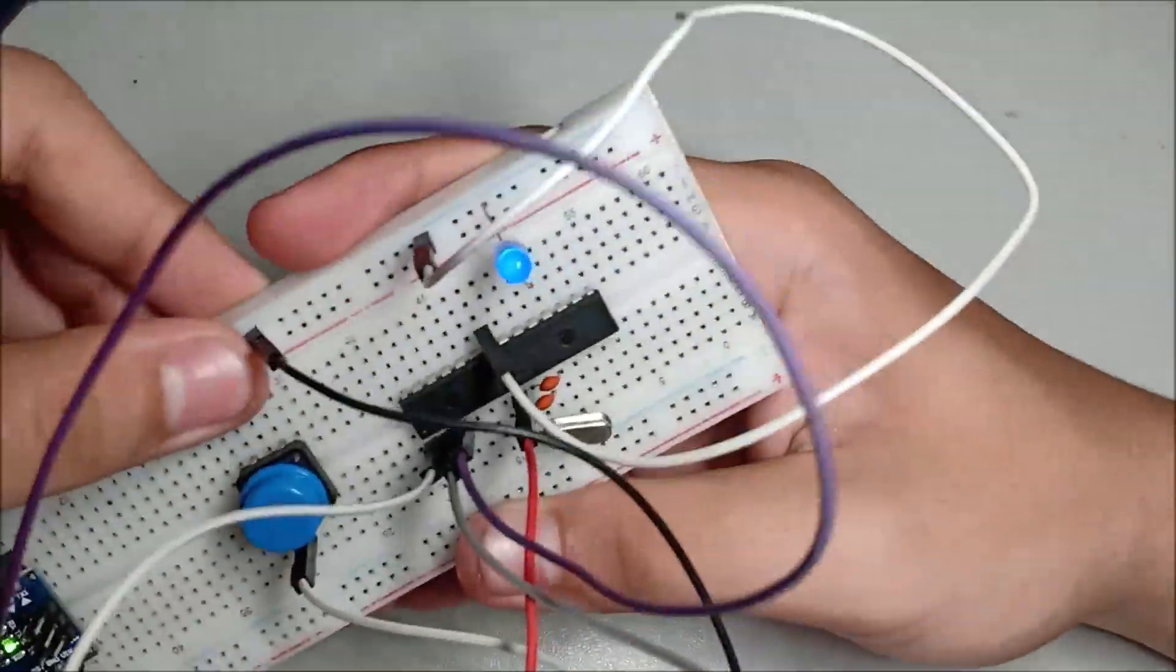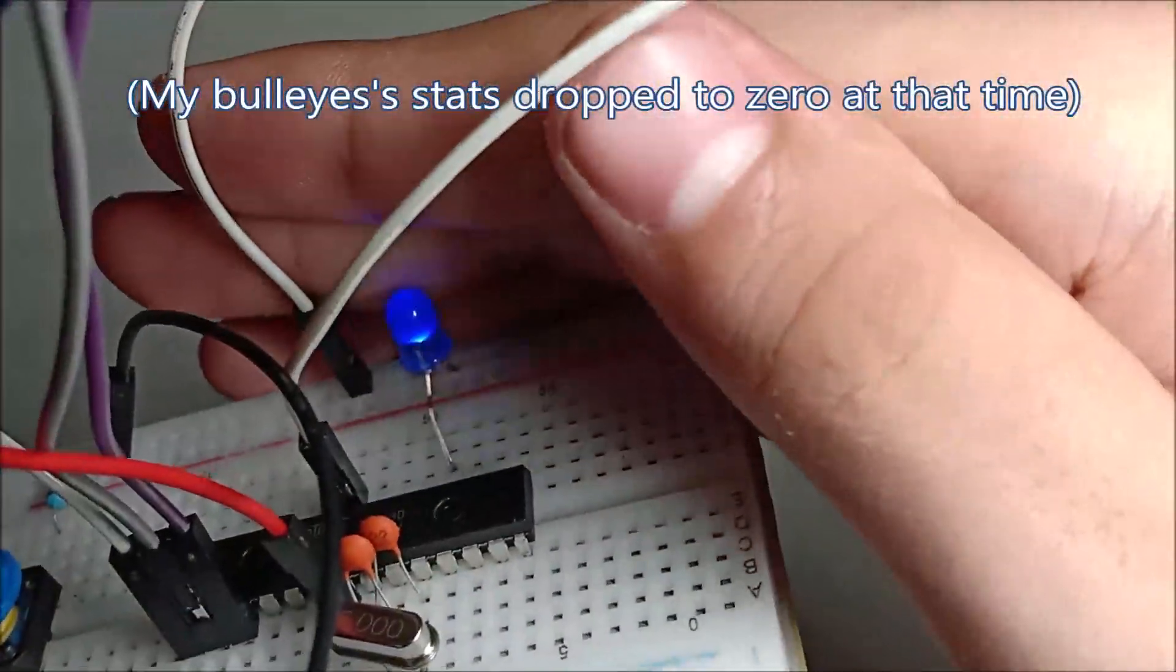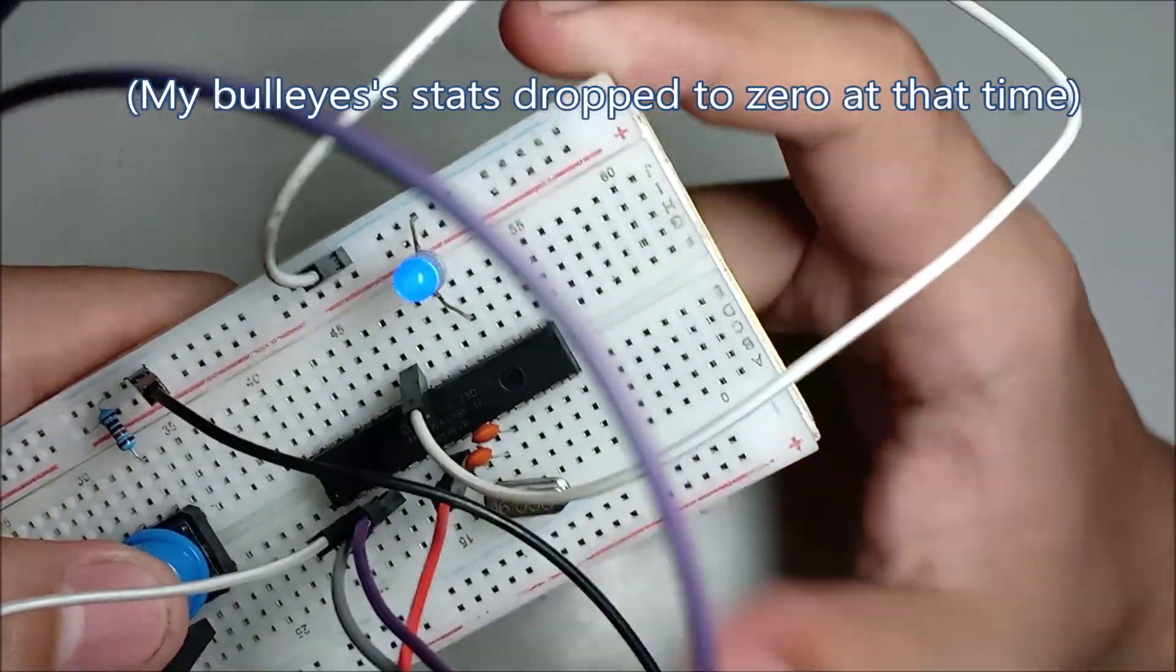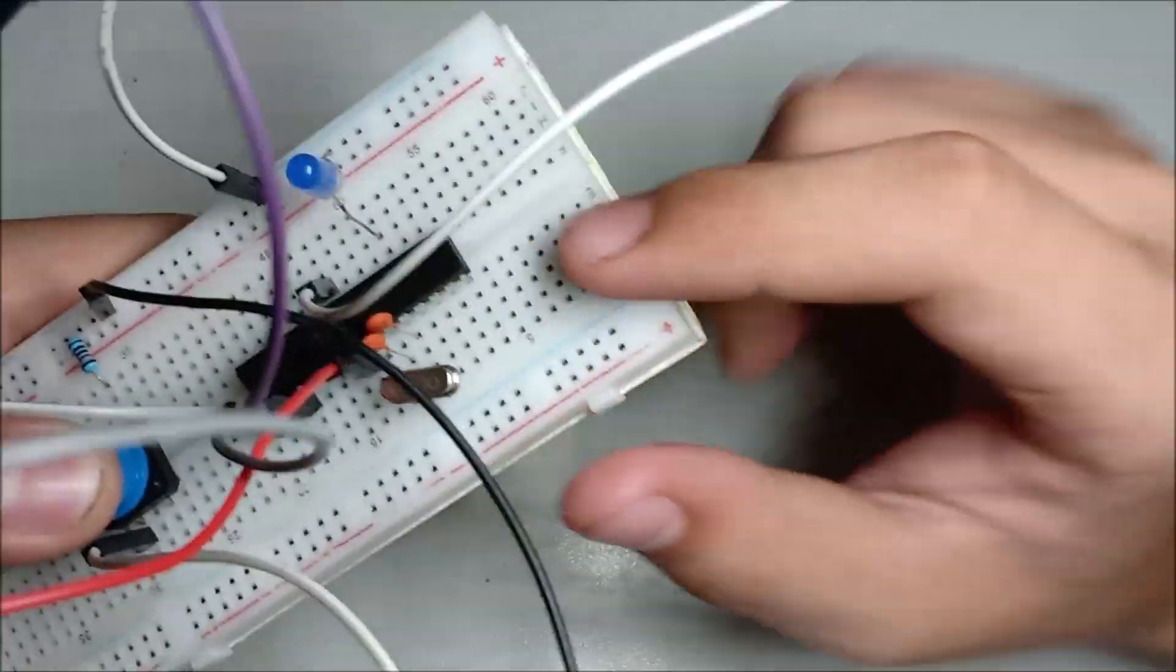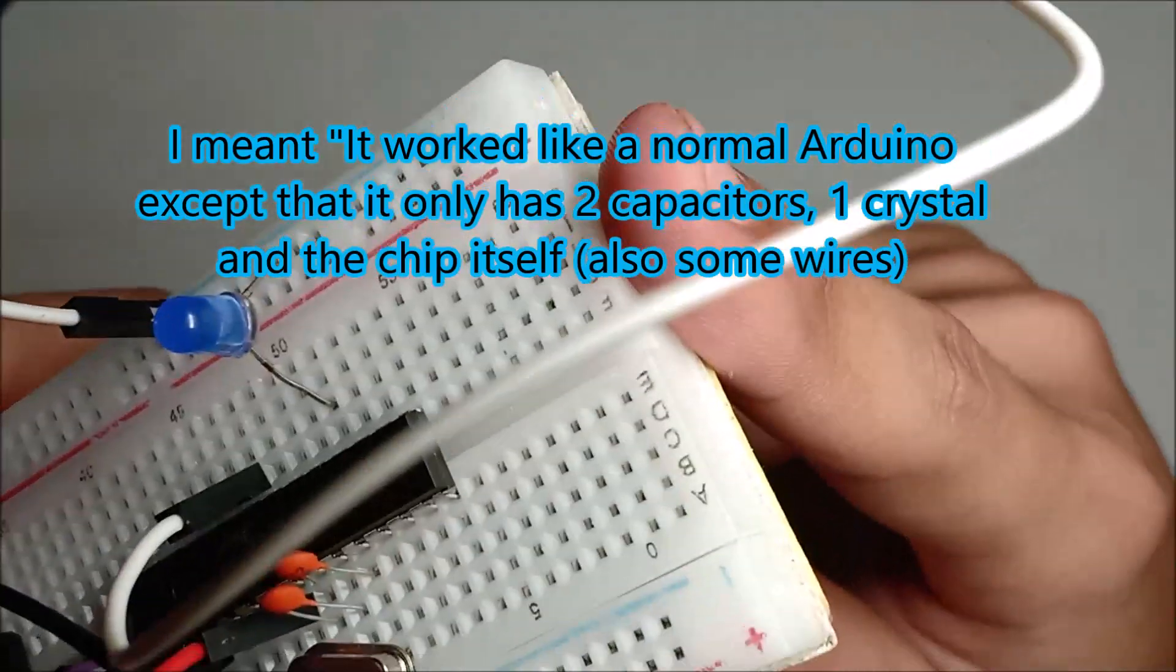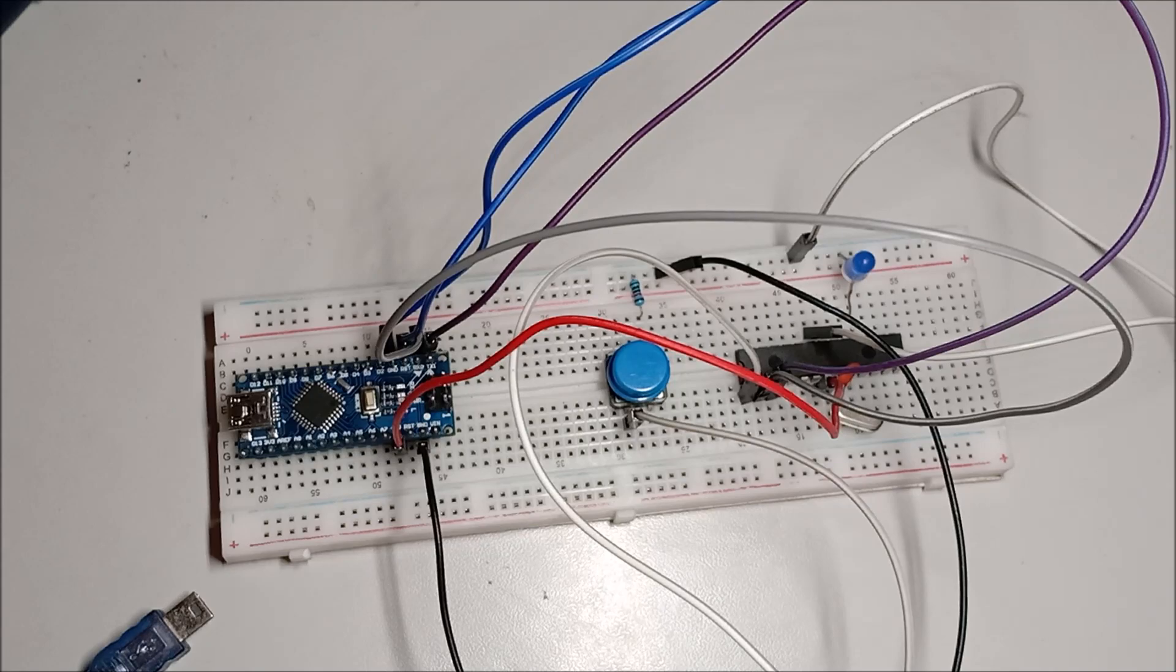If I press the reset button it doesn't work because I connected the resistor in the wrong way. If I press this reset button again it resets the chip, resets everything inside like a normal working Arduino.